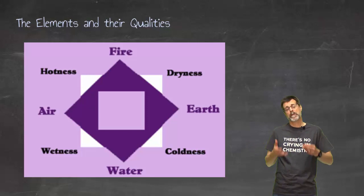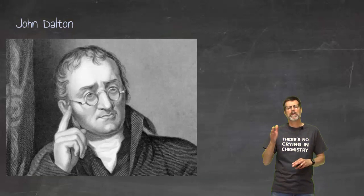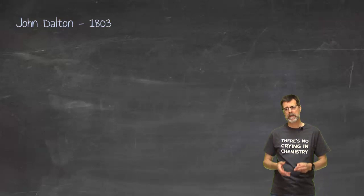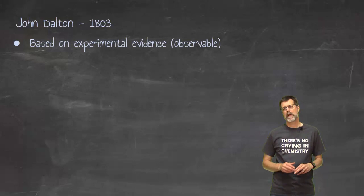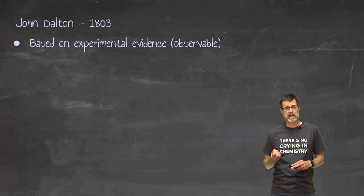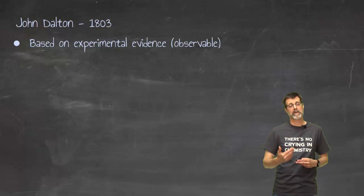However, current atomic theory always points back to John Dalton as our starting point. In that year, which again I'm never going to ask you, he had experimental evidence. His theory was the first one that was based on experimental evidence, so it was observable reality, observable data that he was trying to explain with his theory.